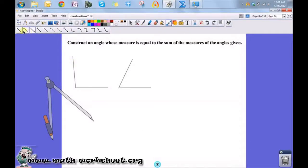Okay, to start this problem, I'm going to start by drawing a line. Let's do it over here. I'm going to use this point here to be the vertex of my angle that I'm trying to construct.